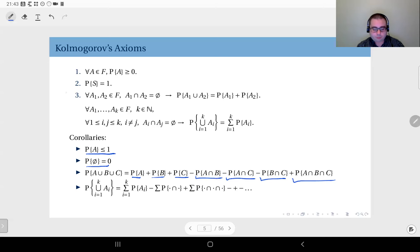Axiom three says disjoint. For instance, if A1 and A2 may not be disjoint, then you should write P(A1 ∪ A2) = P(A1) + P(A2) - P(A1 ∩ A2).